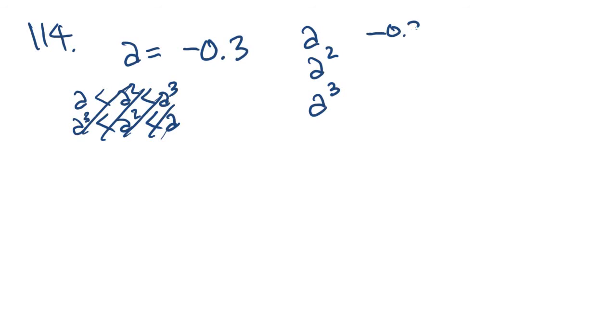Well, a they tell us is negative 0.3. A squared is going to be a positive - negative and a negative is positive - 0.09. A cubed is going to be a negative again, 0.027. So looking at this, the largest to smallest is going to be a is the smallest, followed by a cubed, and a squared is the largest because it's the only positive. That is answer choice B.